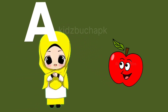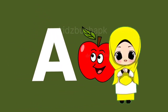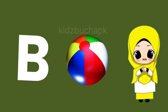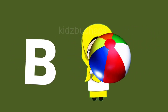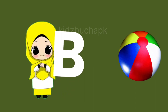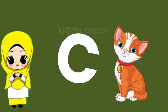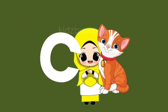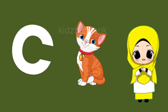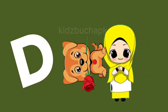A for apple, apple means save. B for ball, ball means gain. C for cat, cat means billy. D for dog, dog means kutah.